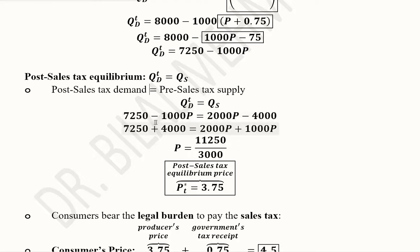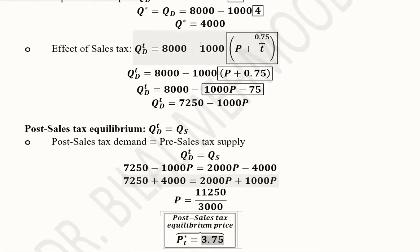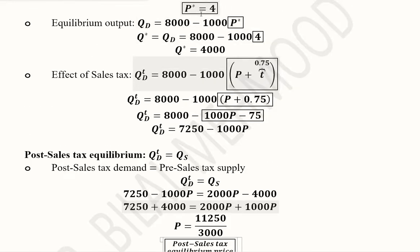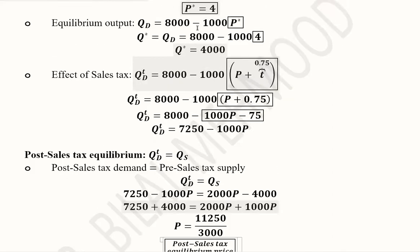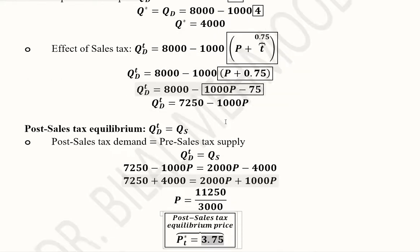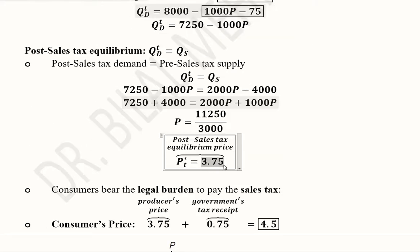Equating the new demand and supply in symbolic terms, then substituting the equation values, we can solve and get the equilibrium price of 3.75. This is the post-sales-tax equilibrium price. Comparing it with the pre-sales-tax price of 4, the price has decreased from 4 to 3.75.